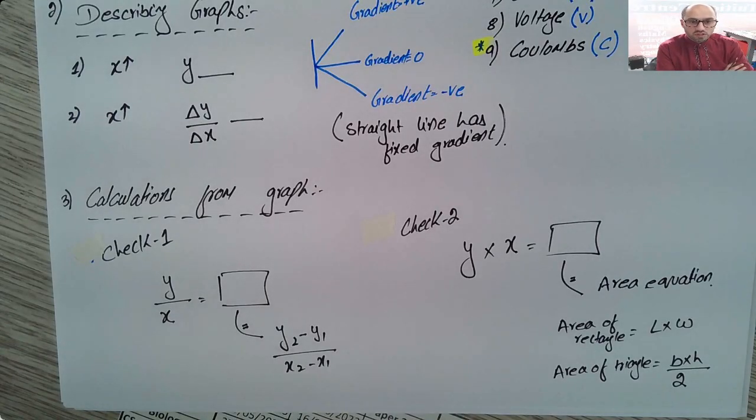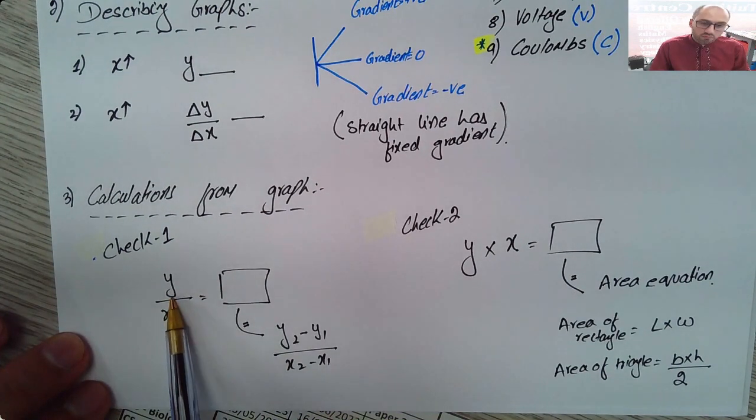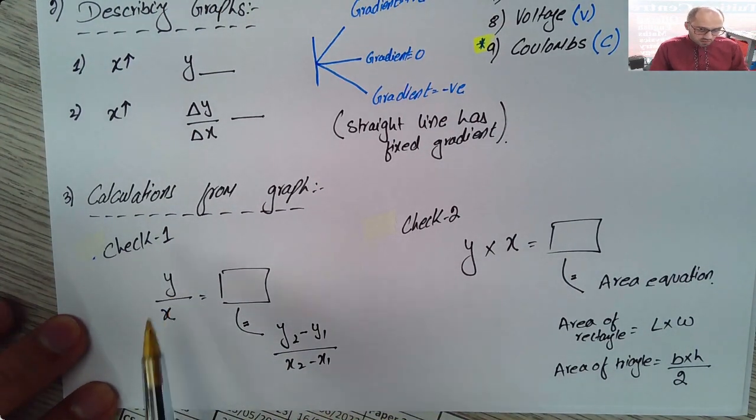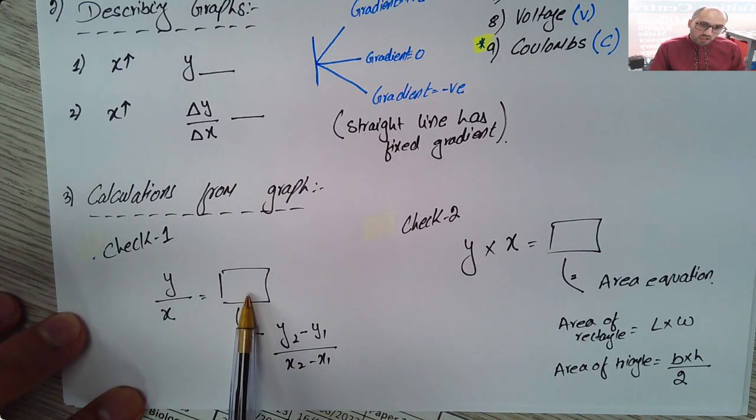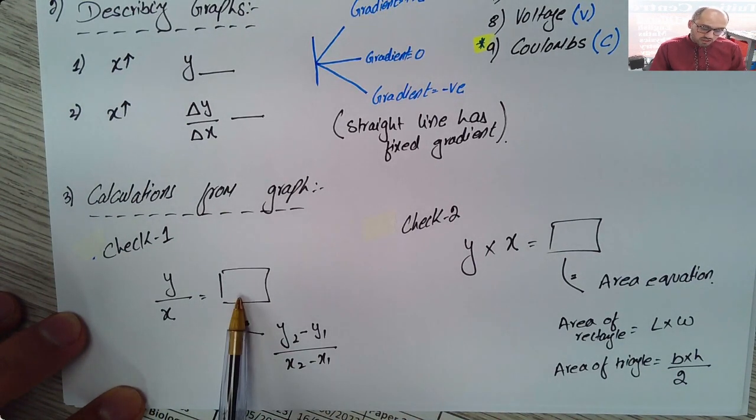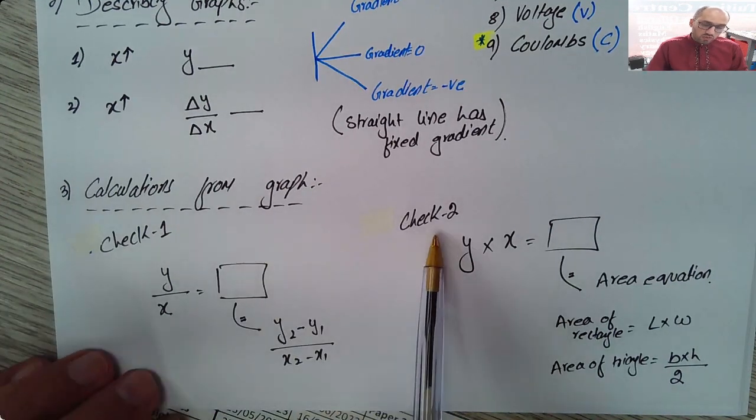The last skill that you need to know is calculations from graphs. Now any question that comes on graphs or whenever you are given a graph in physics exam you must always perform two checks. Check one says you will divide whatever the variable is on y-axis with a variable on x-axis. And whatever quantity you get to calculate this quantity you will use this formula.